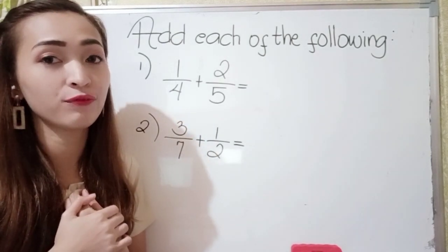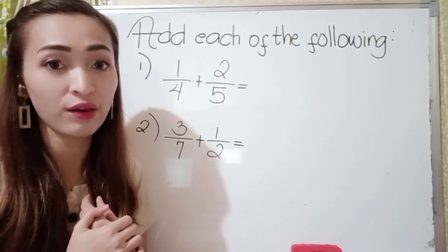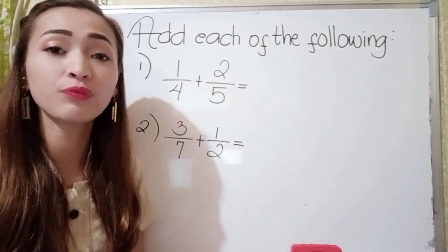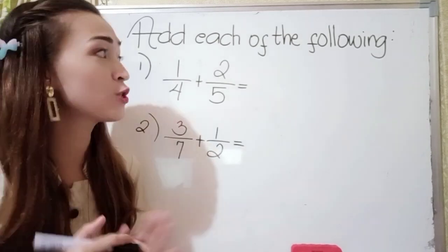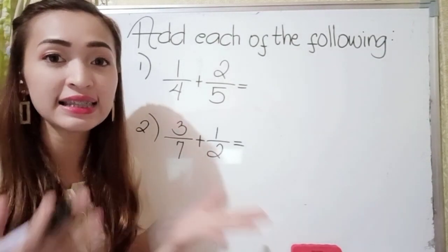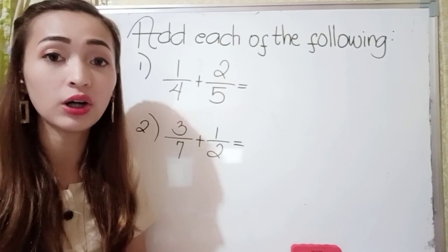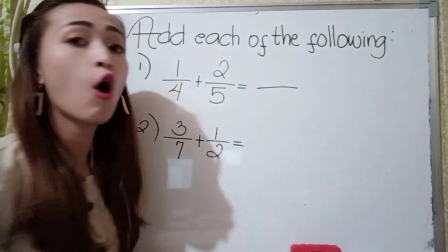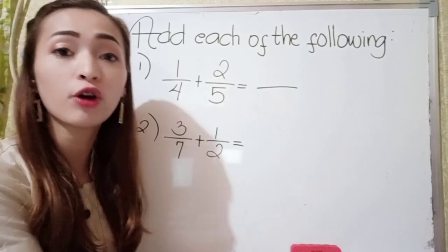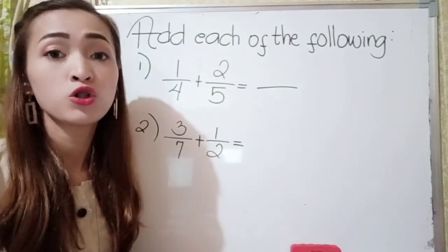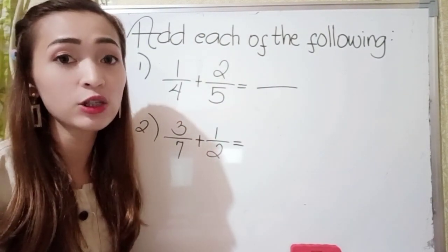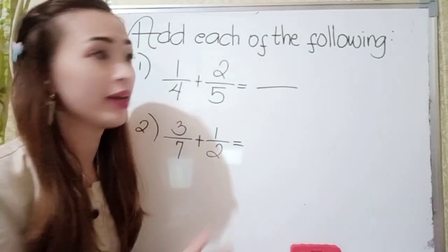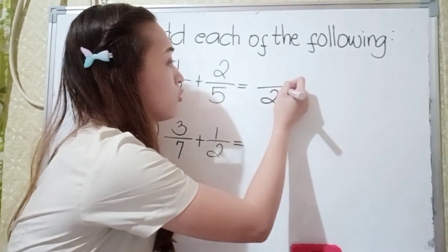For number one, we have one-fourth plus two-fifths. They have different denominators, so first we need to get the LCD or least common denominator. The least common denominator of four and five is 20.